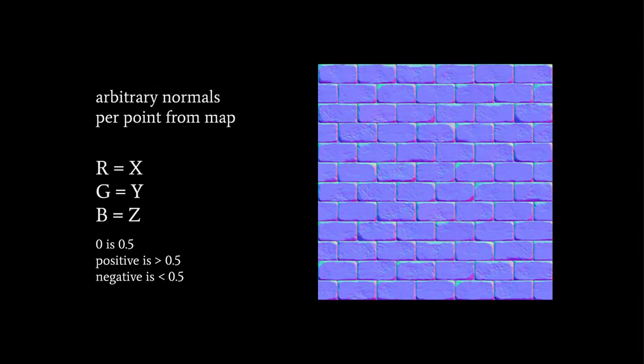The idea of normal mapping is that we define an arbitrary normal for all points of our surface using a texture map.